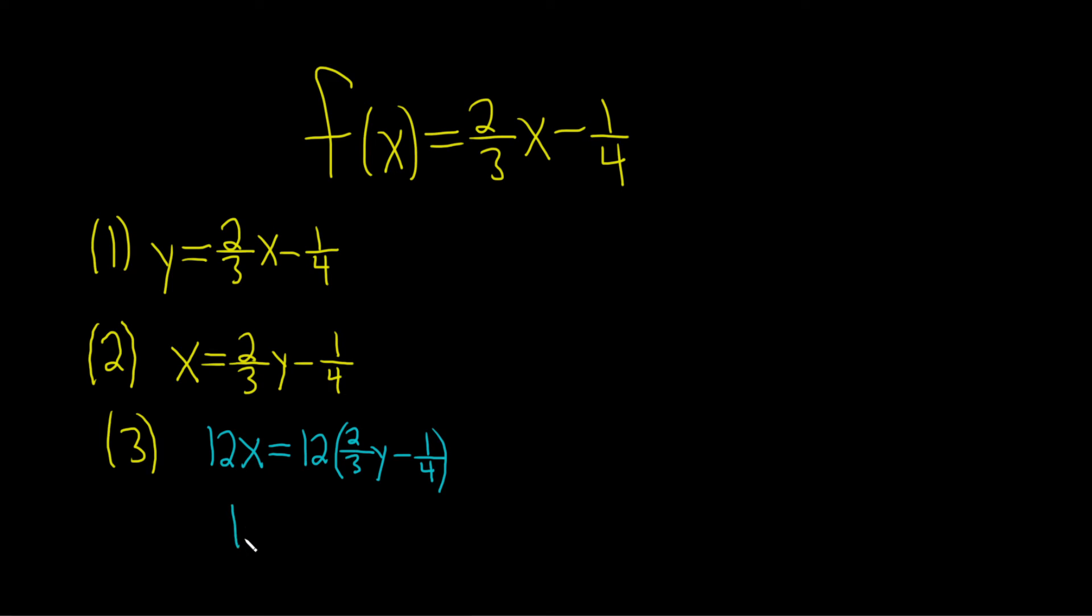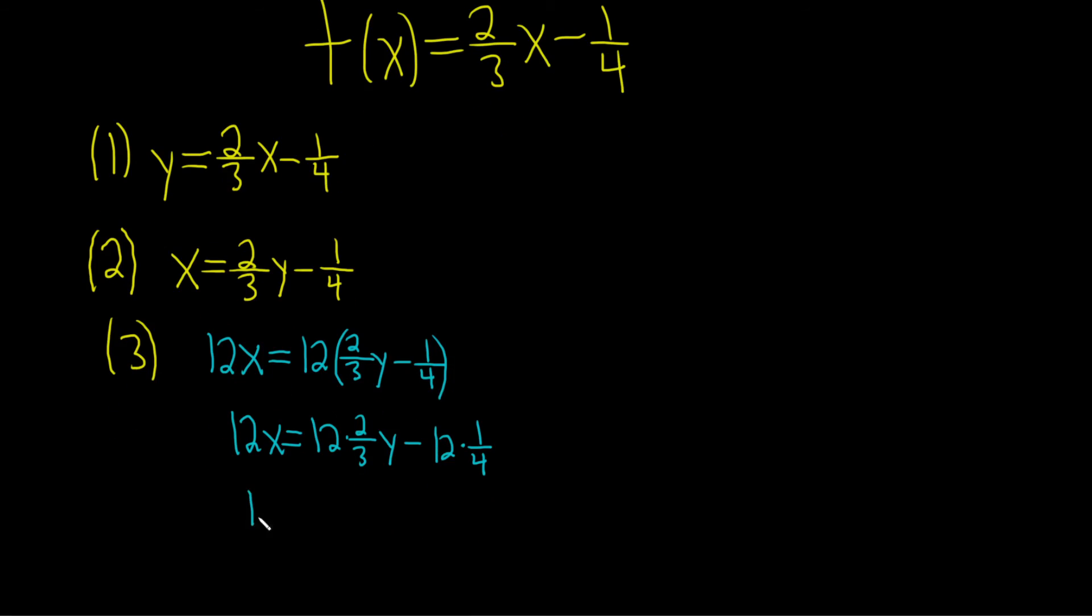This is going to be 12x equals 12 times 2/3 y minus 12 times 1/4. So we end up with 12x on the left. 3 goes into 12 four times, 4 times 2 is 8, so we get 8y. And then 4 goes into 12 three times, so we get minus 3.